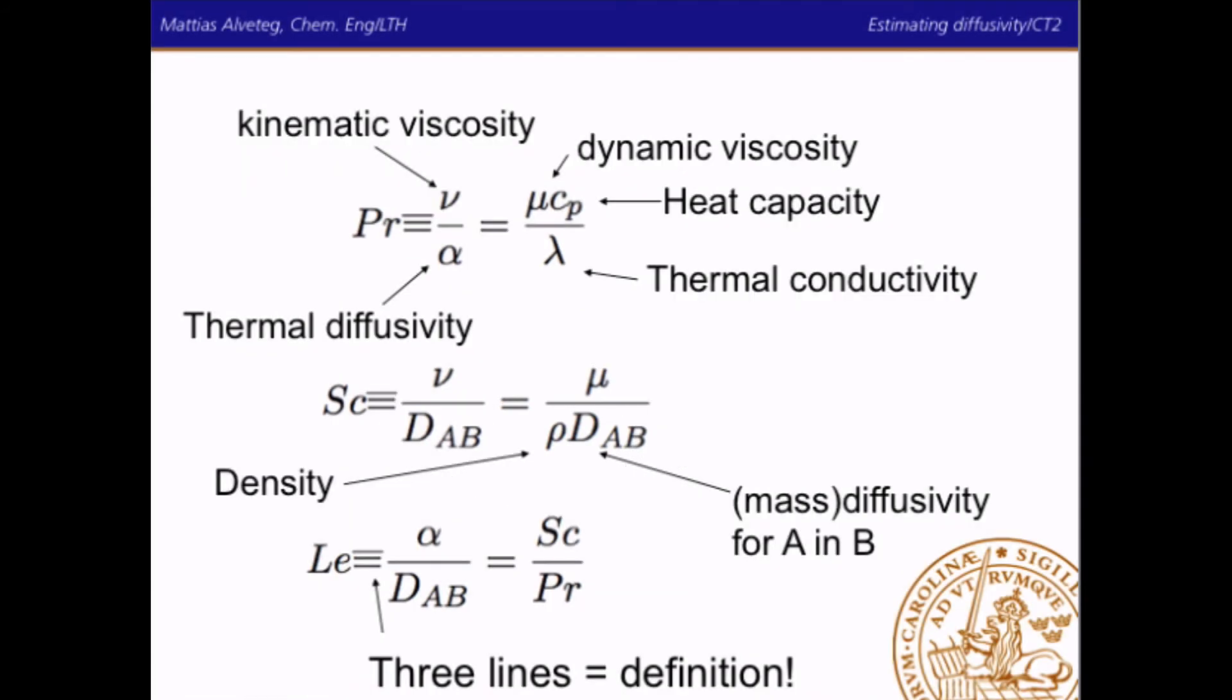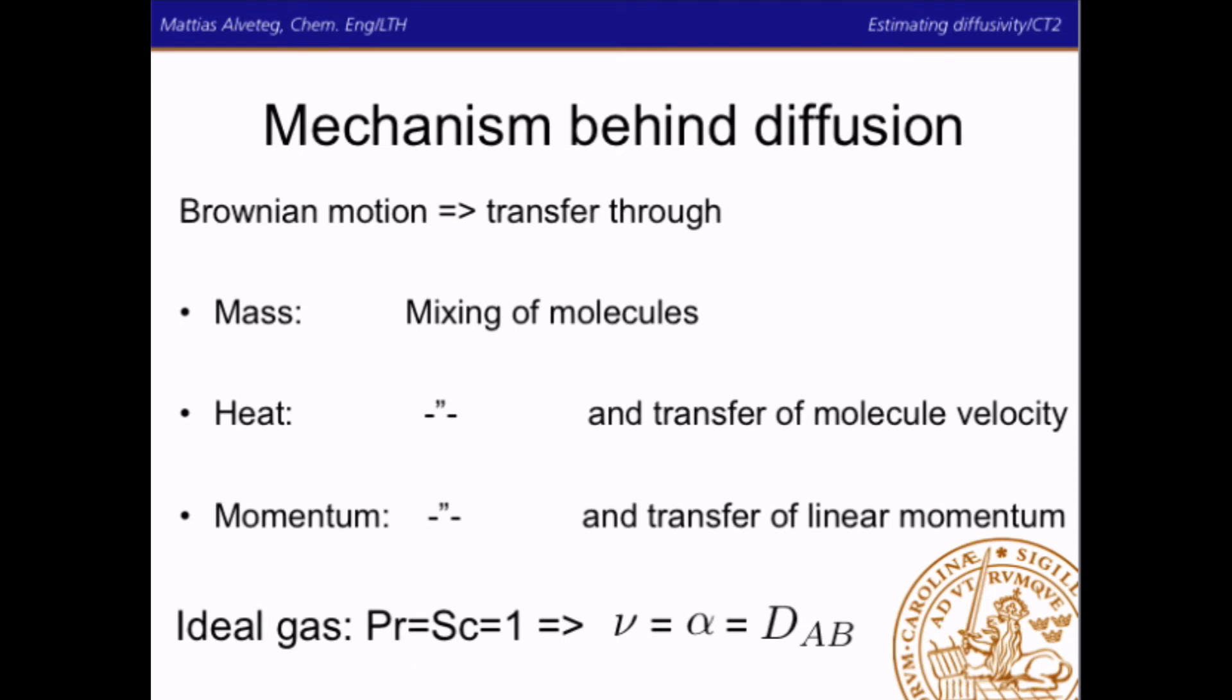So what is the mechanism behind diffusion? Well, it's Brownian motion. But it works a bit differently for the three different entities. So for mass, it's simply the mixing of molecules. For heat, it's the mixing of molecules and the possible transfer of molecule velocity from one molecule to another. For momentum, it's the mixing of molecules and the transfer of linear momentum from molecule to molecule. So the direction matters in momentum transport while it doesn't matter in heat transport.